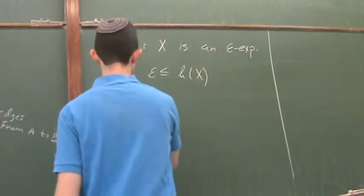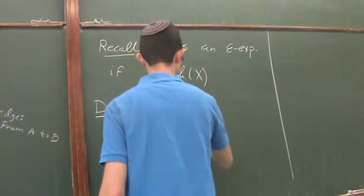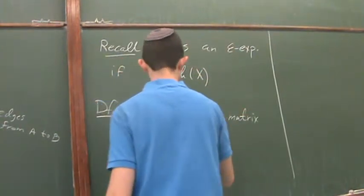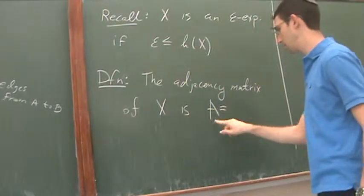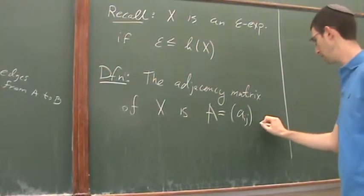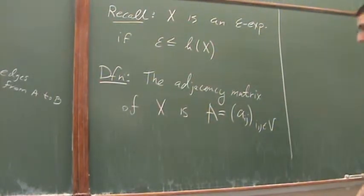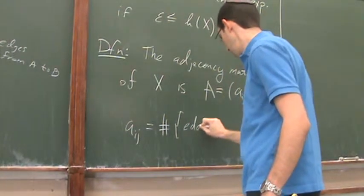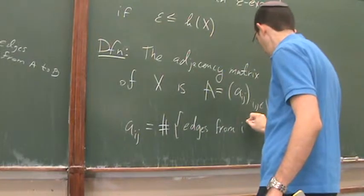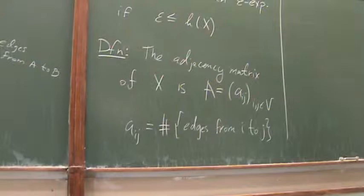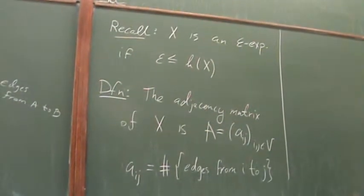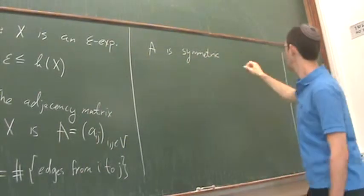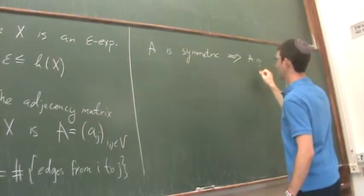The adjacency matrix of X is usually denoted by A, with entries A_ij where i and j are vertices, and A_ij equals the number of edges from i to j. Since we are interested in undirected graphs, A is always symmetric, which means A is diagonalizable.